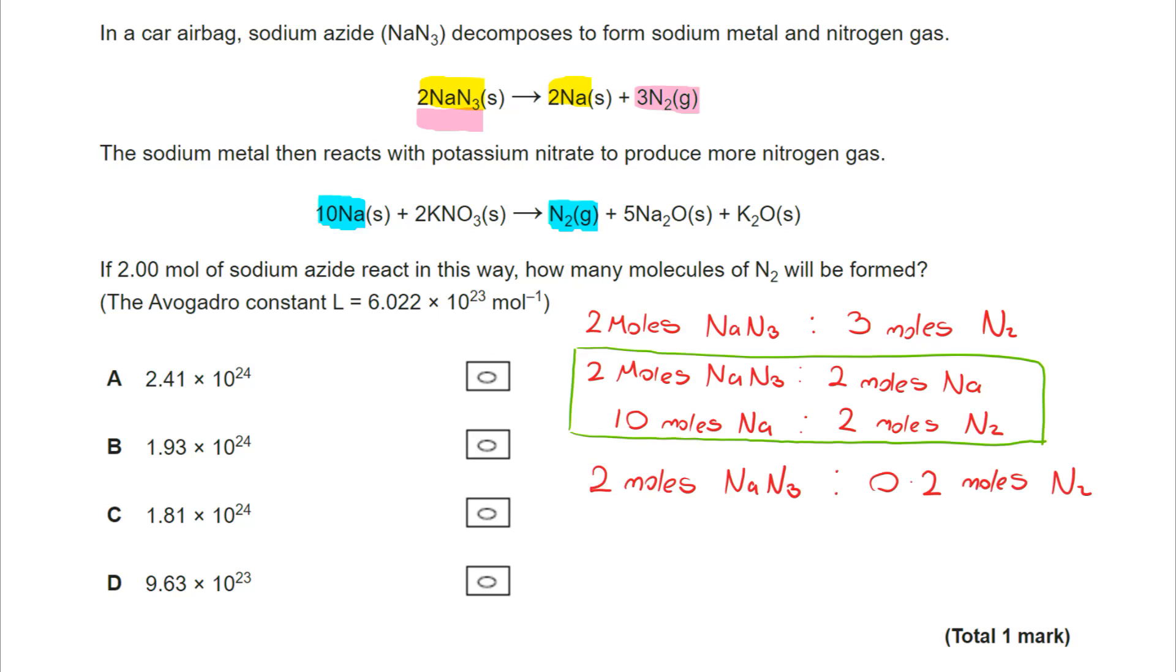So we've not just got three moles of N2 from the first equation, we're also making nitrogen in the second stage. Now, if 10 moles of Na make two moles of N2, two moles will make 0.2 moles. So I have now got a total of 3.2 moles of N2. So I found out my number of moles, but I want my number of molecules. I multiply it by Avogadro's number, and I get 1.93 by 10 to the power of 24. Correct answer is B.